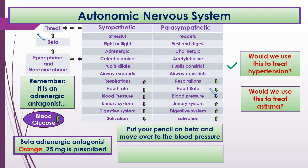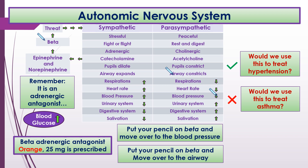Would we use this beta adrenergic antagonist orange to treat asthma? Put your pencil on beta or adrenergic and move to the airway on the other side — this causes airway constriction. So no, we would not use this medication as a treatment for asthma.